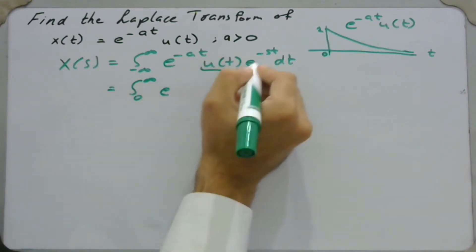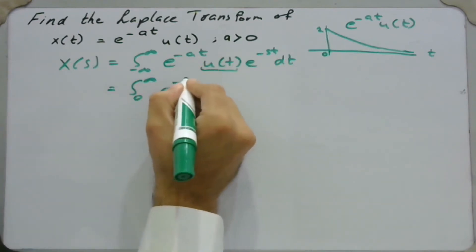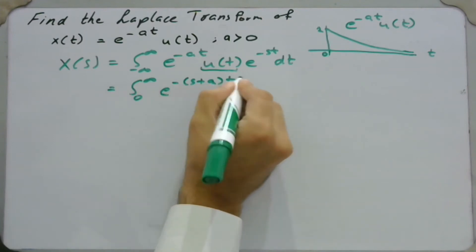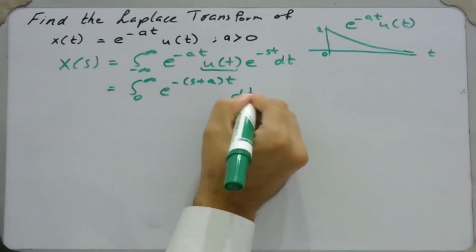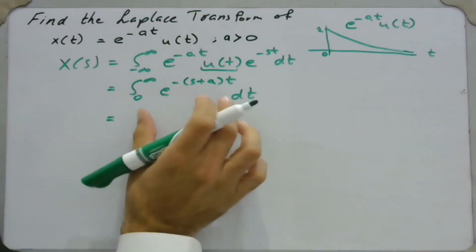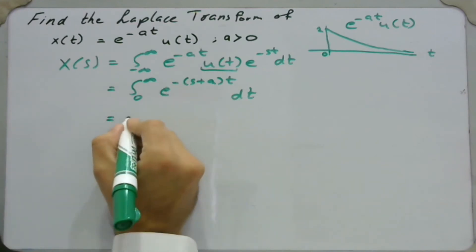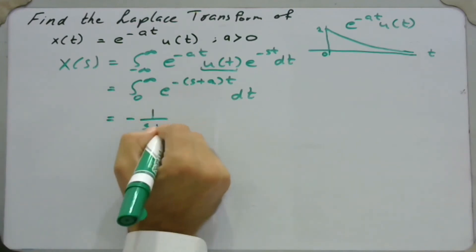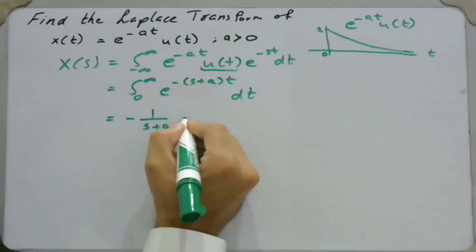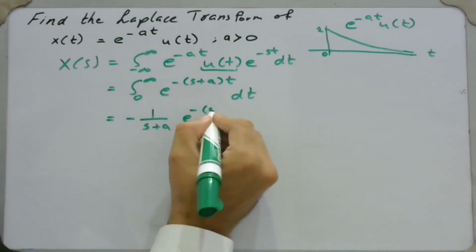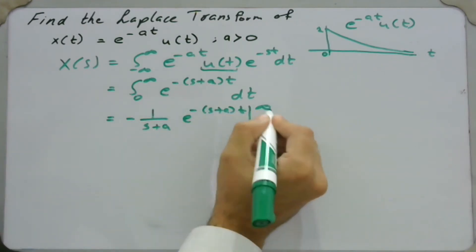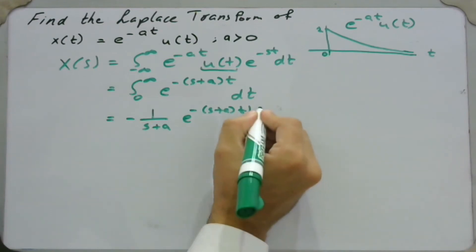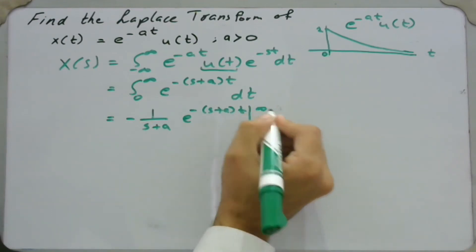Next, we combine the two exponentials to get e^(-(s+a)t), and the integration of this function is simply minus 1 over (s+a) times the function, evaluated for t starting from 0 and terminating at infinity.